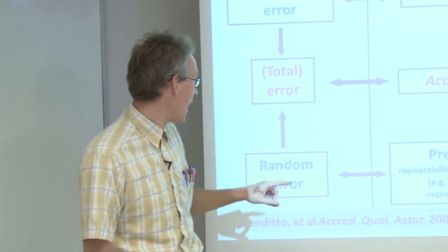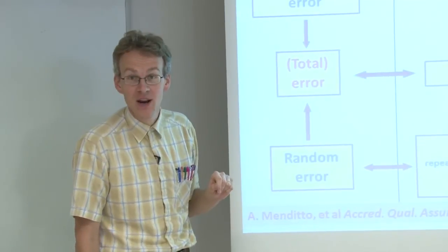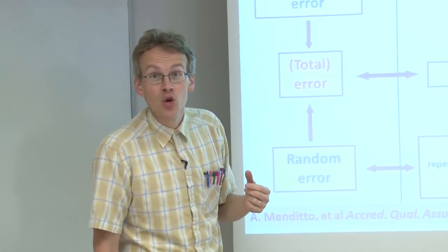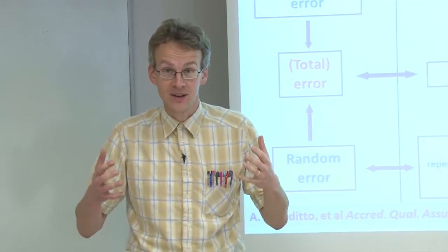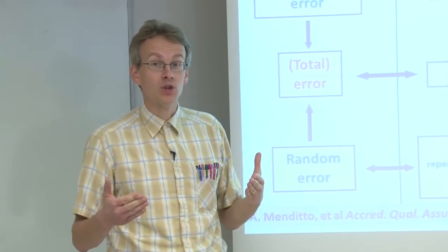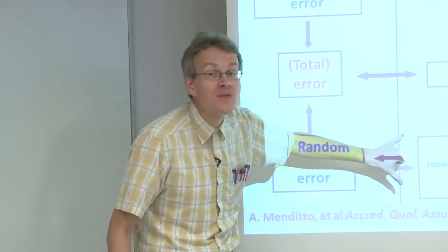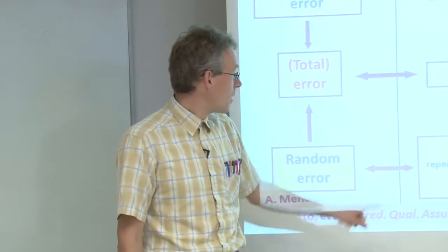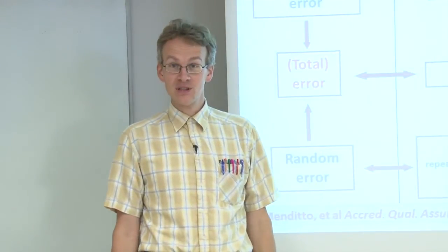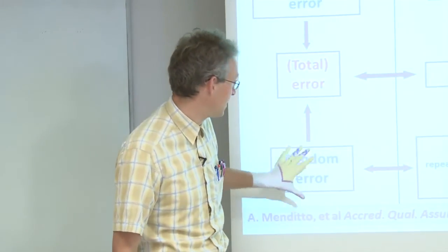And all of them are estimates of random error in the sense that in order to arrive at truly random error, we would need to make an infinite number of measurements, which we never can make. So from a finite number of measurements, we can estimate the error.